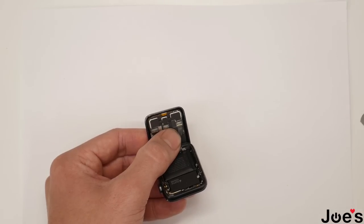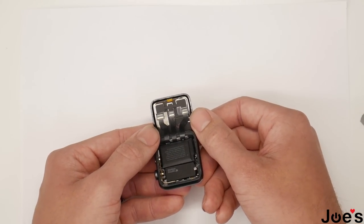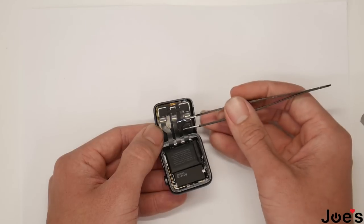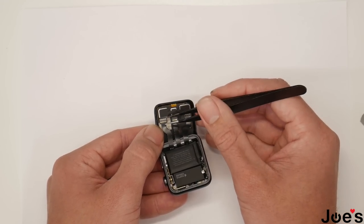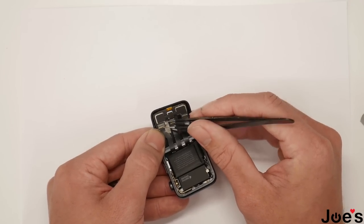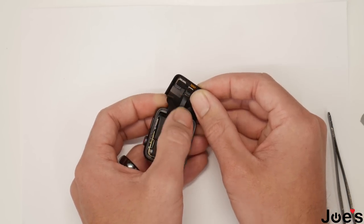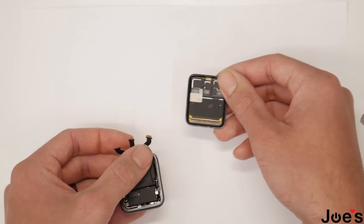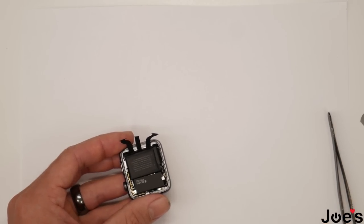What we got here is the connectors. We're going to want to flip open these connectors to release each one of these ribbons, pop them open, pull each one out one at a time. All right, there's the screen off.